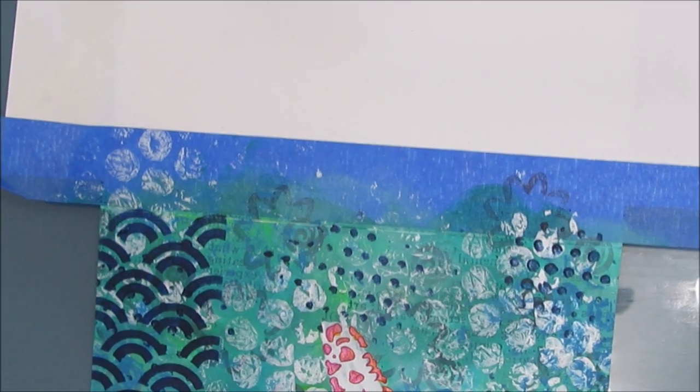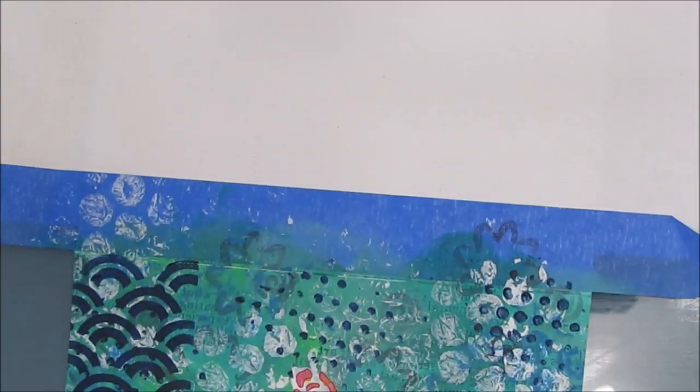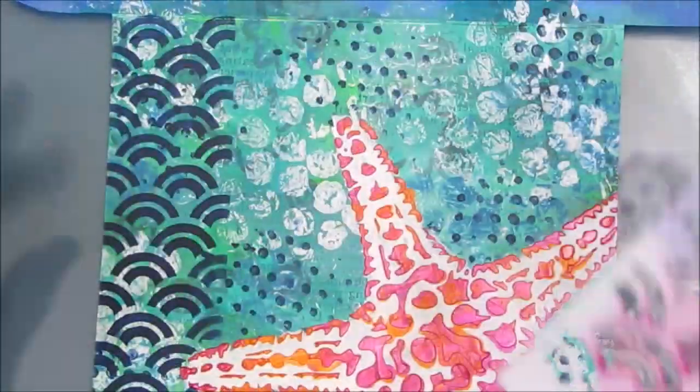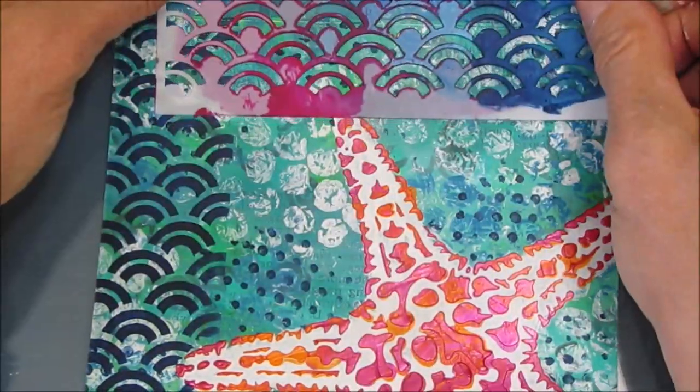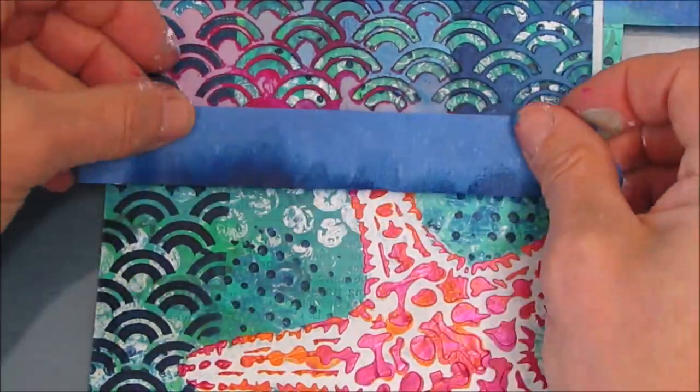I did move the stencil down and I'm getting the bottom of the page. Now I want to do some across the top but I'm going to change it up a little bit and just have two of the waves, not three like the side.